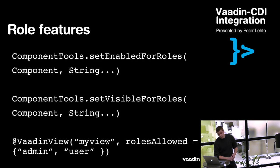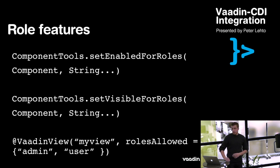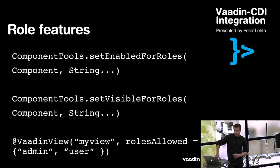The @VaadinView annotation, used with the VaadinView interface implementations, also allows you to specify a rolesAllowed parameter, which works with JAAS and does not let the user see the view if their roles are not in the allowed list.